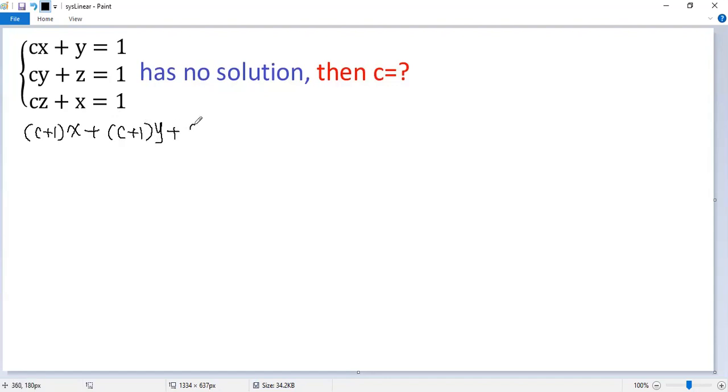Similarly, for z, we get c plus 1 times z. The right side equals 3.